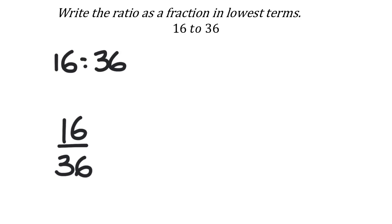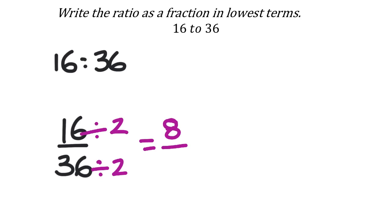When we see 16 over 36, I can divide both 16 and 36 by 2. Some of you know you could divide by even more. 16 divided by 2 is 8, and 36 divided by 2 is 18. This works the same way written as a ratio with the colon — 16 to 36 becomes 8 to 18.